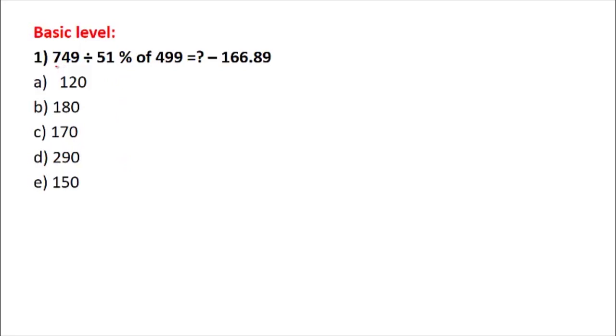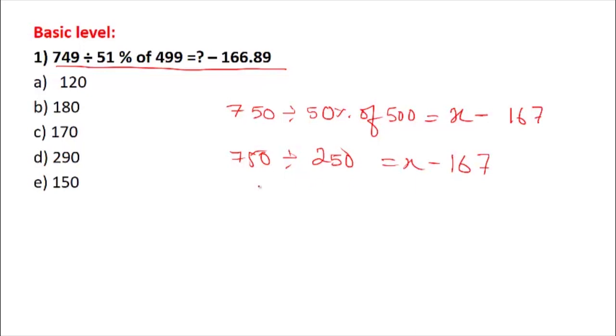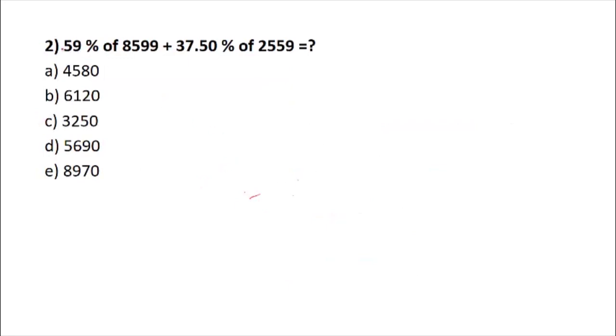Let us take the first problem. 749 could be written as 750 divided by 50 percent of 500. The question mark could be replaced by x, and 166.89 could be written as 167. 50 percent of 500 is 250. So 750 divided by 250 equals x minus 167. This goes for 3, so x is 170. You can take the value to be C.